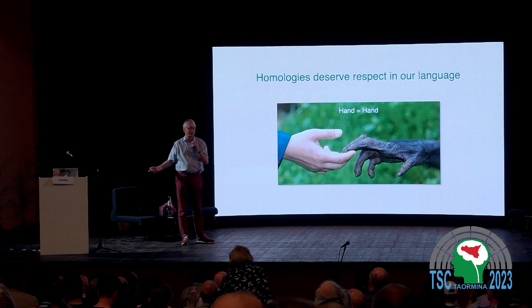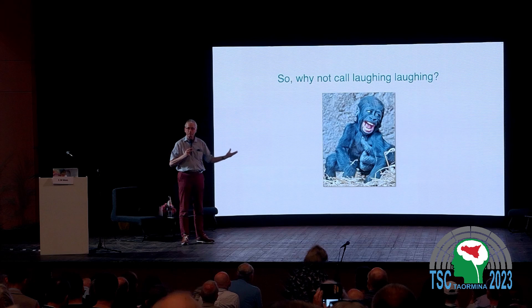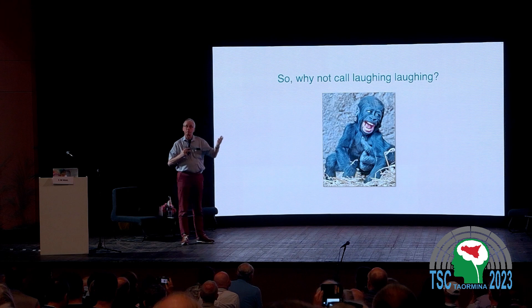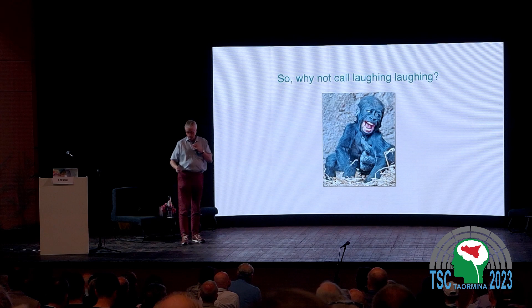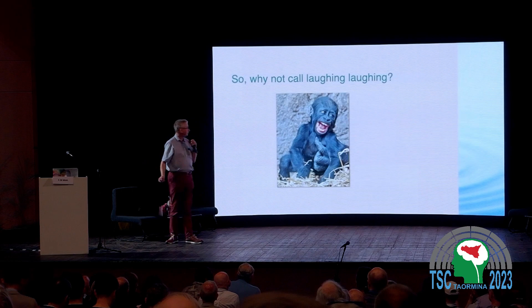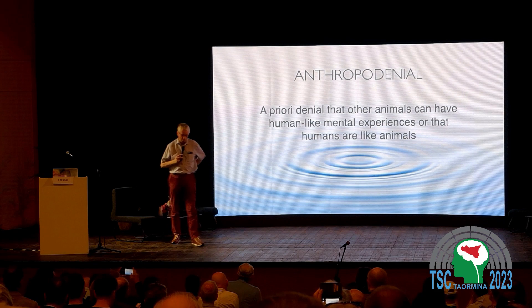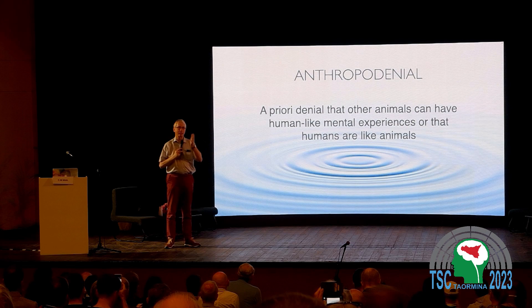You cannot call the face of a chimpanzee a snout — you have to respect the similarities in your language. For example, if you see a baby gorilla being tickled by its mom and laughing, you have to call it laughing. When I was a student, we were asked to call it 'vocalized panting.' So I had to invent a new word: 'anthropodenial' — the opposite of anthropomorphism — where people a priori insist that we are different and demand different language.